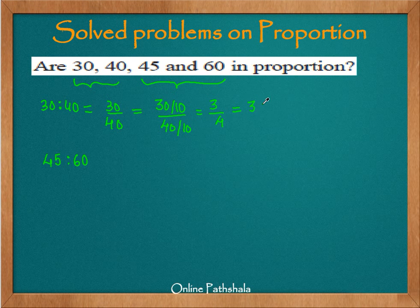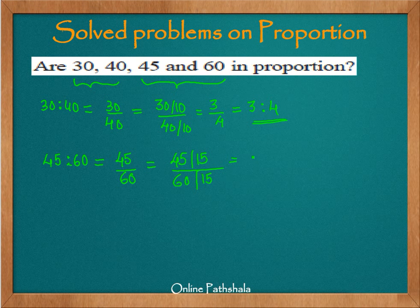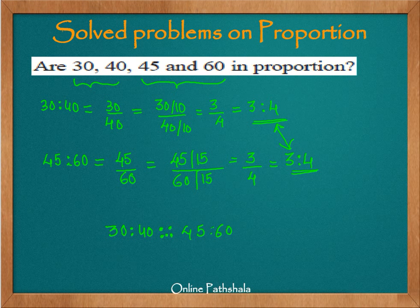The simplest form of 30 is to 40 is 3 is to 4. Now let us look at the other ratio, 45 is to 60. We have 45 by 60 and we can divide straight away by 15. So 45 by 15 is 3 and 60 by 15 is 4, giving us 3 is to 4. Both ratios are the same, therefore 30 is to 40 is in proportion with 45 is to 60.